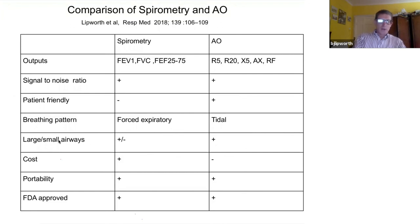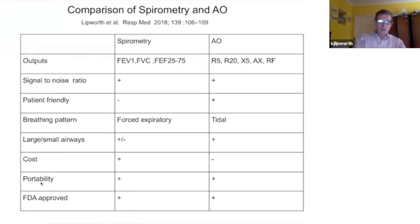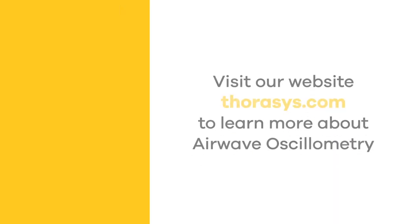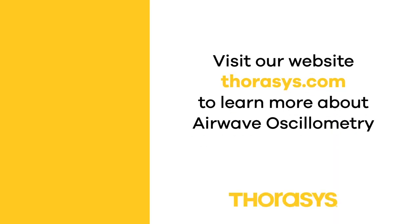You can distinguish between large and small airways very easily with airway oscillometry, but it's much more difficult with spirometry even using FEF25-75. The one advantage spirometry has is it's relatively inexpensive compared to airway oscillometry. They're both portable — at least the TremoFlo is portable — and they're both FDA-regulatory approved.